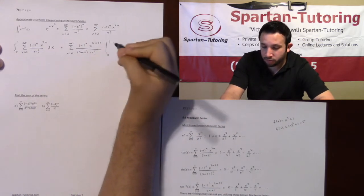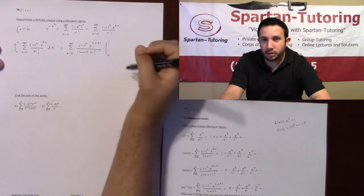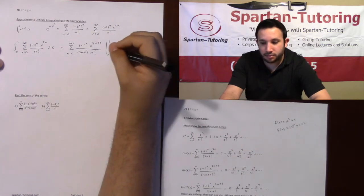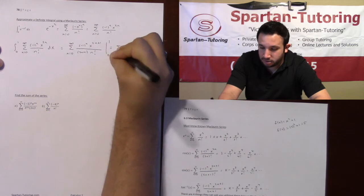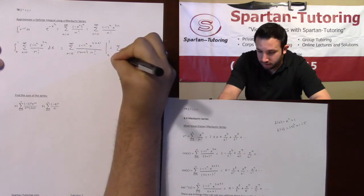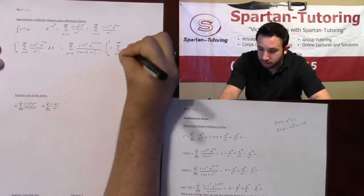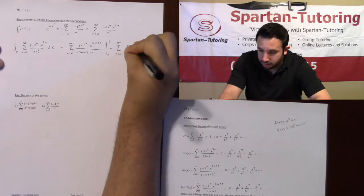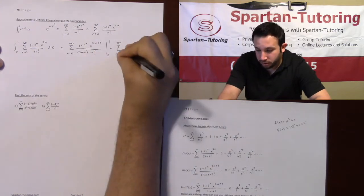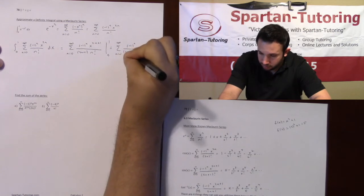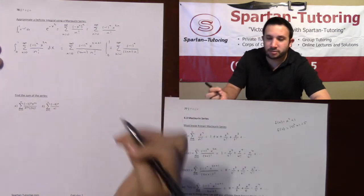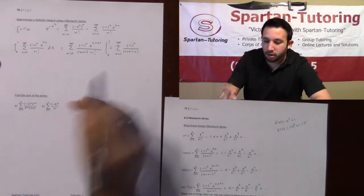Like any definite integral, going from zero to one, I'm going to plug the top number into x minus plug the bottom number into x. Plugging the top number in, one to the anything is just one. So I'll have sum zero to infinity of negative one to the n times one over two n plus one times n factorial, minus plugging in zero.